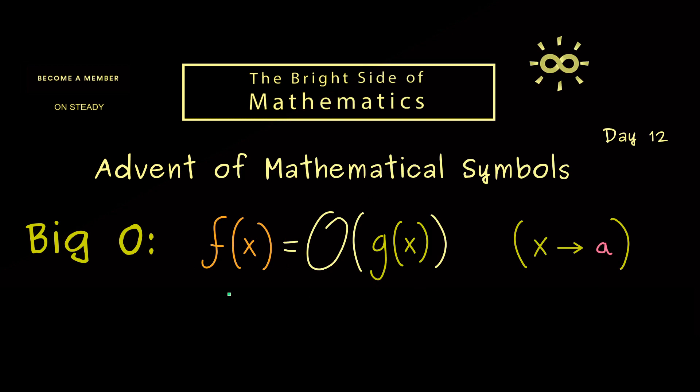Indeed it simply means that the function f on the left hand side does not grow stronger than the function g on the right hand side when x goes to the number a. Hence usually this is helpful when you are not able to put in a into the two functions. For example we always have this case when a is the symbol infinity.